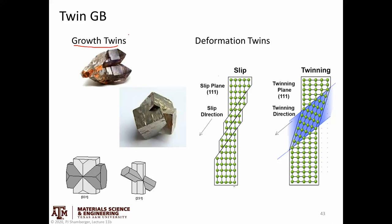In terms of when and how they occur, you can have something called a growth twin. This occurs during a solidification process or during a solid-state transformation, where a defect spontaneously starts and continues. These can lead to interpenetrating crystals, as seen in these two cases.